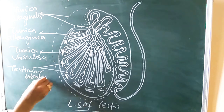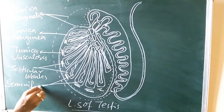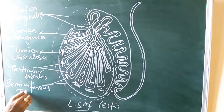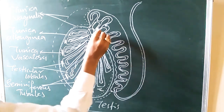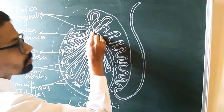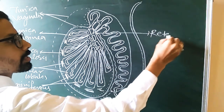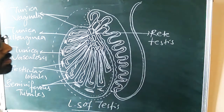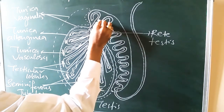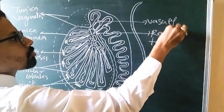These are the testicular lobules. Inside the testicular lobules you have the seminiferous tubules. This region you can label as rete testis.